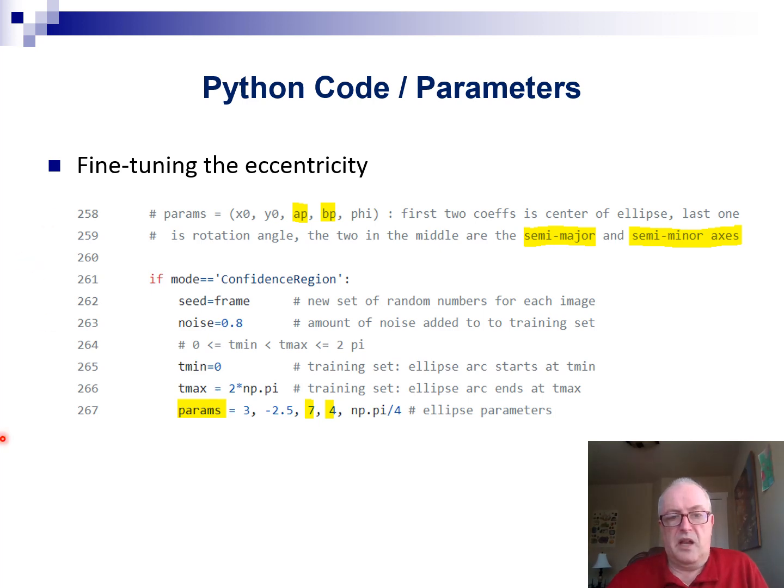Here we'll be interested mainly in changing two parameters associated with the ellipse. There are a number of parameters, like the centers, the orientation angle. Here we're going to focus on the semi-major and semi-minor axes, which are denoted as AP and BP in the code.